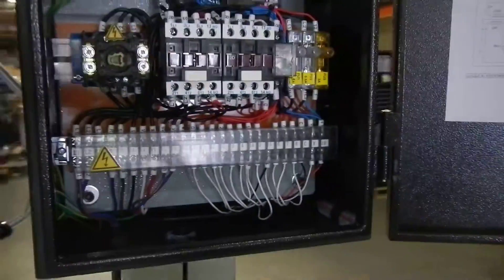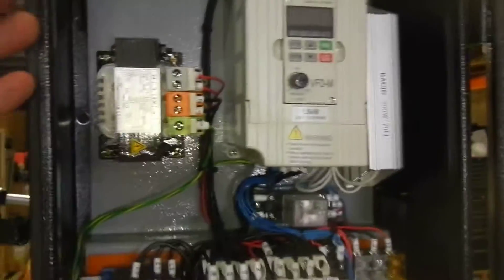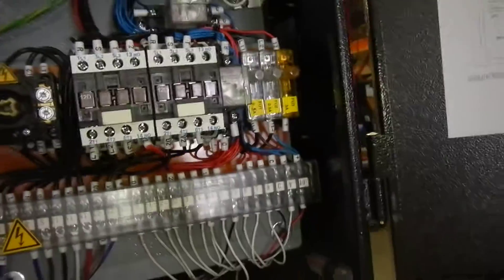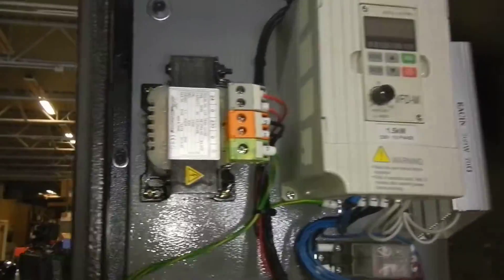Coolant pump there. I'm going to go over to the back of the control panel to show you. You've got a variable speed control, Delta, all your contactors, your fuses, your inverter, and your transformer.